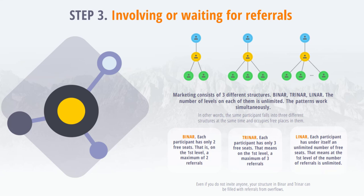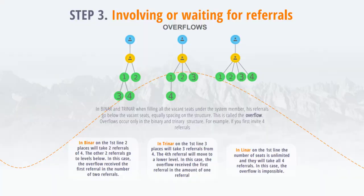Even if you do not invite anyone, your structure in Biner and Triner can be filled with referrals from spills. Overflow: in Biner and Triner, when all the available places are filled under a system member, his referrals move lower to the available places, evenly distributed across the structure. This is called overflow.